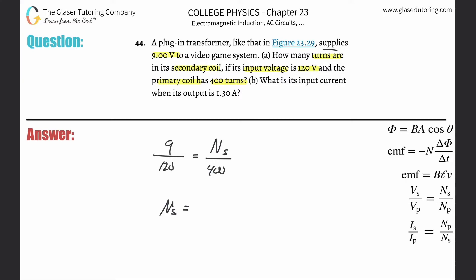So it's nine times 400 divided by 120, right? And that's going to be just 30. So that's 30 turns.